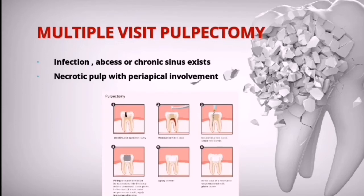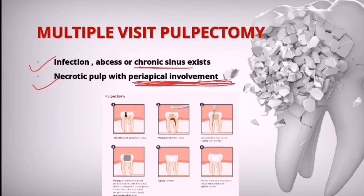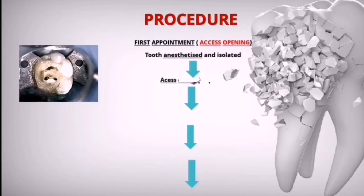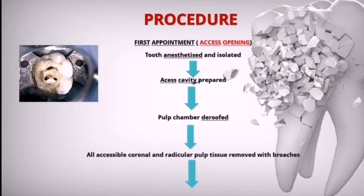Multiple-visit pulpectomy is indicated when there is infection, abscess, or a chronic sinus, or when the necrotic pulp has periapical involvement. In the first appointment: anesthetize and isolate the tooth, prepare the access cavity, completely de-roof the pulp chamber, and remove all accessible coronal and radicular pulp tissue with broaches. Then place a formocresol cotton pellet, place a temporary restoration, and dismiss the patient.